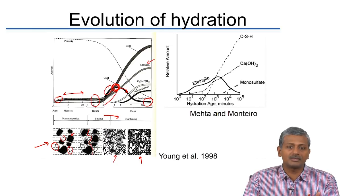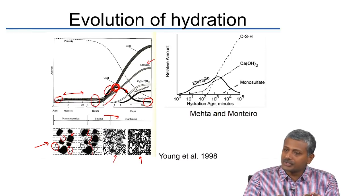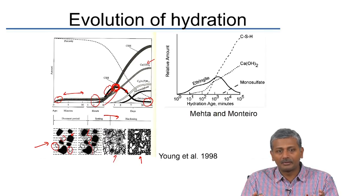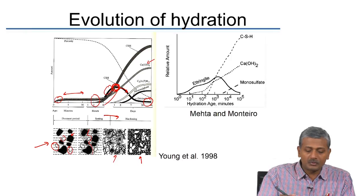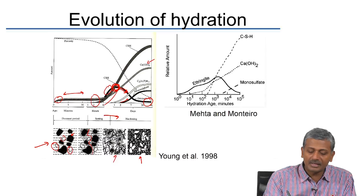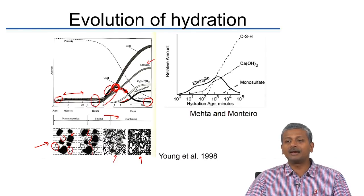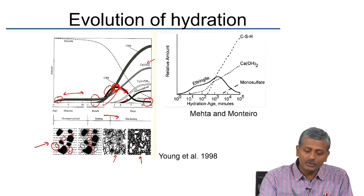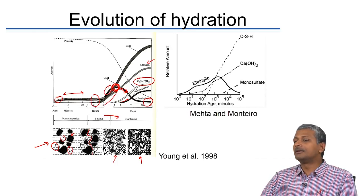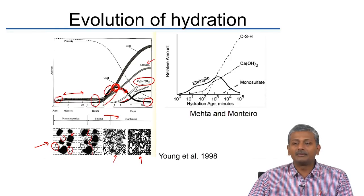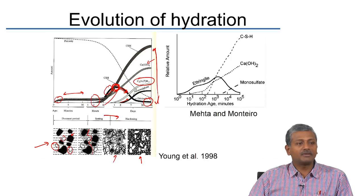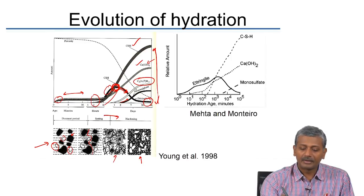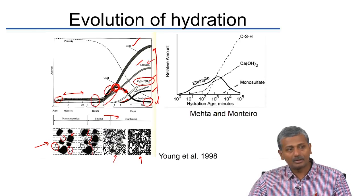CSH formation also produces calcium hydroxide, and ettringite from aluminates is produced alongside. Beyond about 1 to 2 days, ettringite starts converting to monosulphate — ettringite decreases and may approach but not necessarily reach zero. The decrease in ettringite is compensated by increasing monosulphate, accompanied by the appearance of calcium aluminate hydrate phases from excess alumina. Long-term products in cement paste are calcium silicate hydrate, calcium hydroxide, calcium alumina ferrite hydrates, and monosulphate.